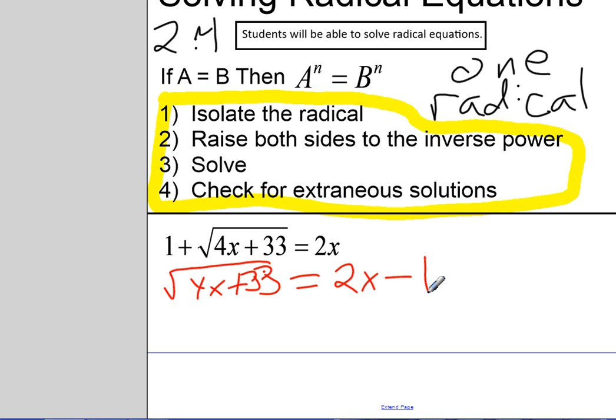Step 2, raise both sides to the inverse power. So the inverse power of the square root is to the power of 2. So I'm raising both sides to the power of 2. All right, so I've got on the left-hand side that power of 2 just undoes the radical, which means I didn't need that radical sign. So that liberates the 4x plus 33 out from underneath the radical.